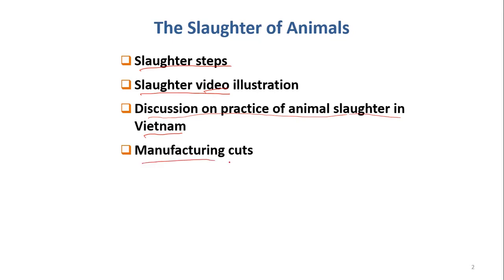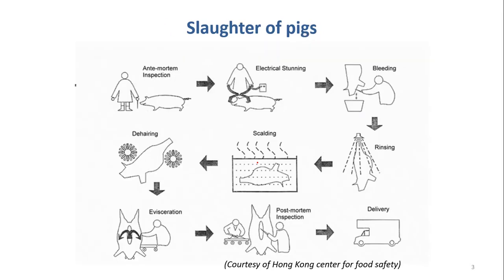And then the last part, we will briefly discuss manufacturing cuts — in Vietnamese, 'pha lóc' — which means cutting the carcass into retail portions. So now we go to the first part: slaughtering steps.